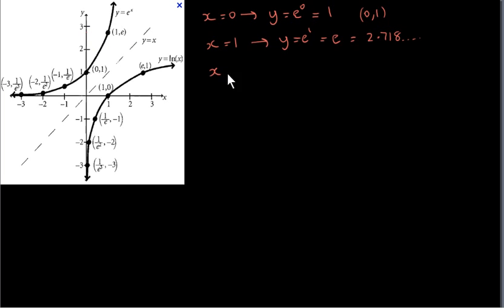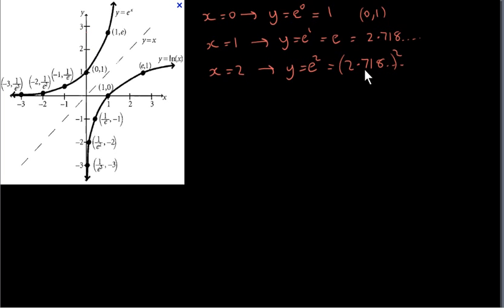When x equals 2, we have y equals e to the power of 2, so that's about 2.718 squared, which is a number close to 9. So we can see that for positive x, the function y equals e to the power of x is an increasing function.